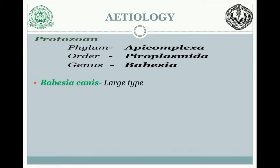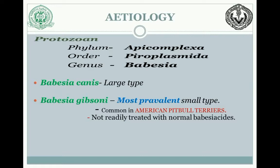Coming to the species: the first is Babesia canis, which is a large type species. The next one is Babesia gibsoni, known as the small type and the most prevalent small type species. Certain breeds are more susceptible to certain species — the American pit bull terrier is highly susceptible to Babesia gibsoni. One important thing to remember is that Babesia gibsoni infection is not readily treated with normal babesiacides.